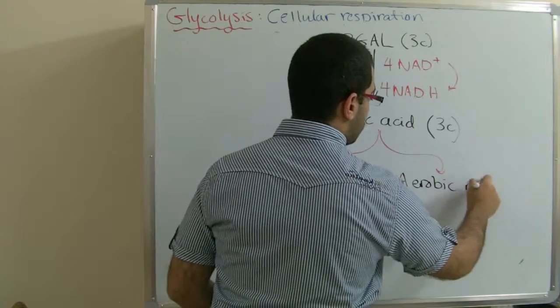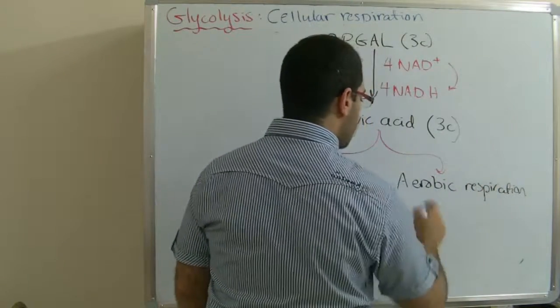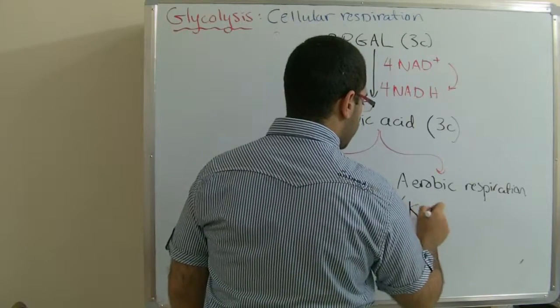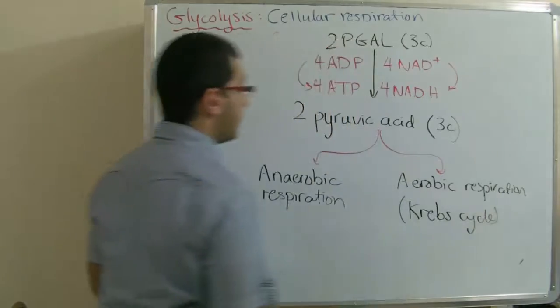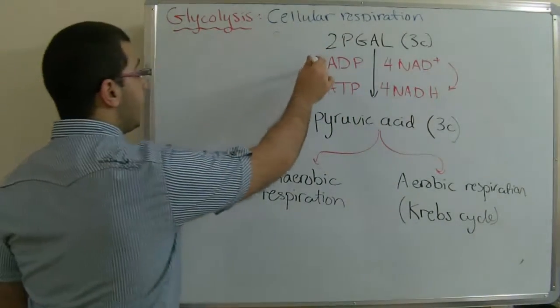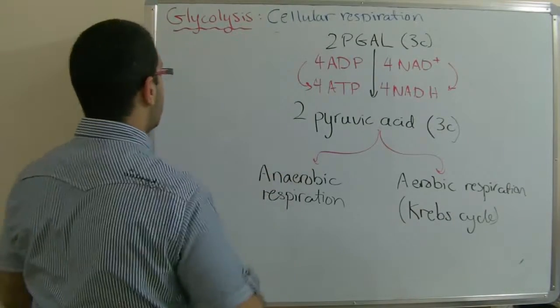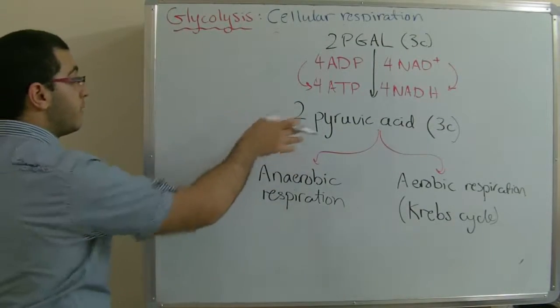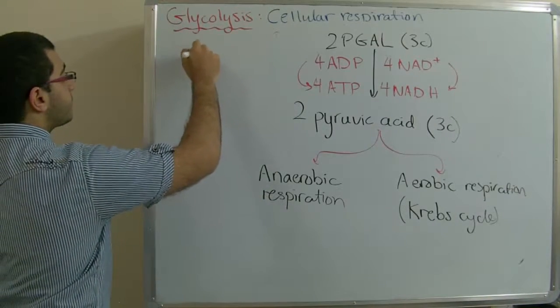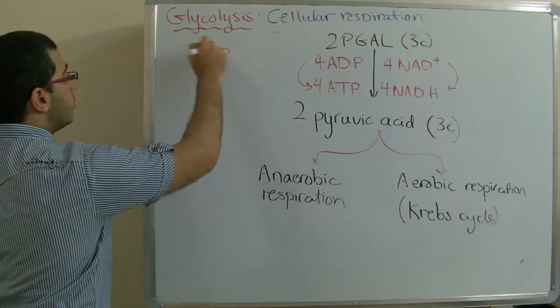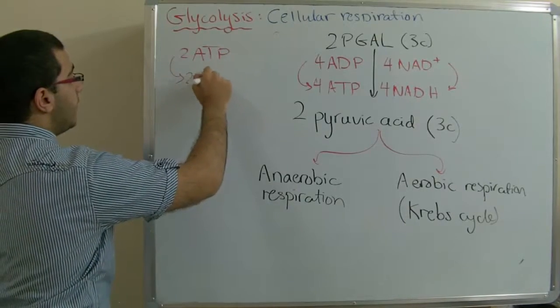Here we have four ADP molecules changed into four ATP, while in the previous steps we noticed that there were two ATP molecules converted into two ADP.